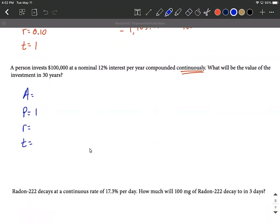Okay, we invest $100,000. So that's our starting amount, the principal, at a nominal 12%, 0.12. And then our time frame, we're looking at 30 years. So we can say A(30), and that is our unknown, is going to be $100,000 multiplied by e raised to the 0.12 times 30 power.